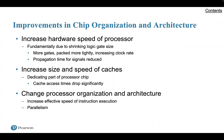What about improvements in chip organization and architecture? As designers wrestle with balancing processor performance against that of main memory and other components, there are three approaches to achieving increased processor speed. First, increasing the hardware speed of the processor — fundamentally by shrinking the size of the logic gates so that more gates can be packed together tightly and the clock rate increased. With gates closer together, propagation time for signals is significantly reduced, enabling a speed-up; an increase in clock rate means individual operations are executed more rapidly.